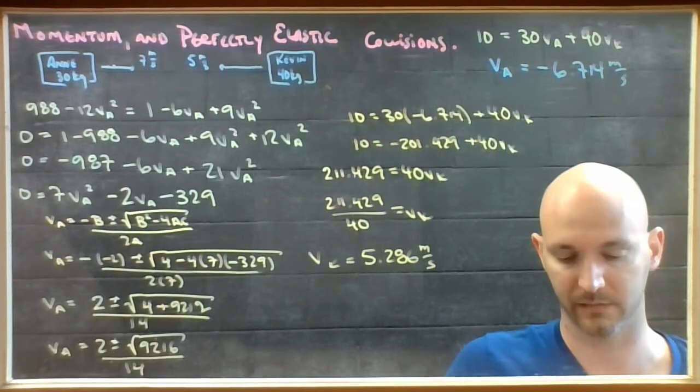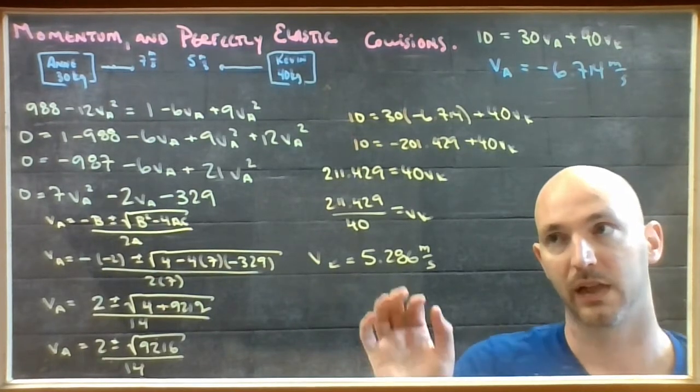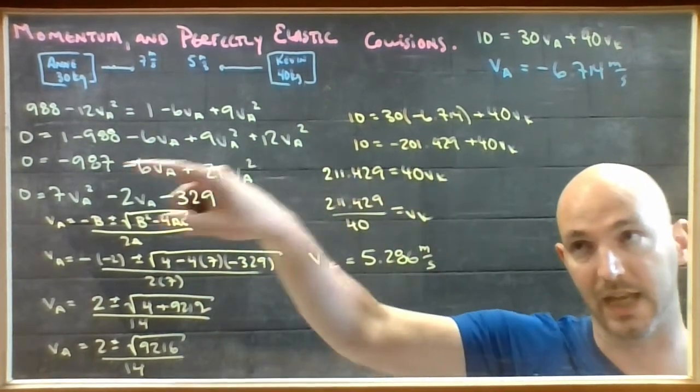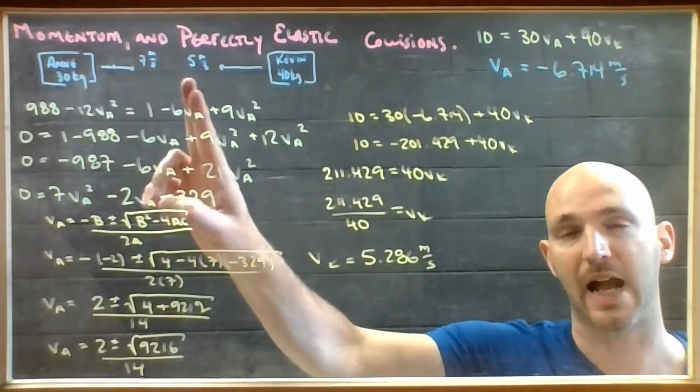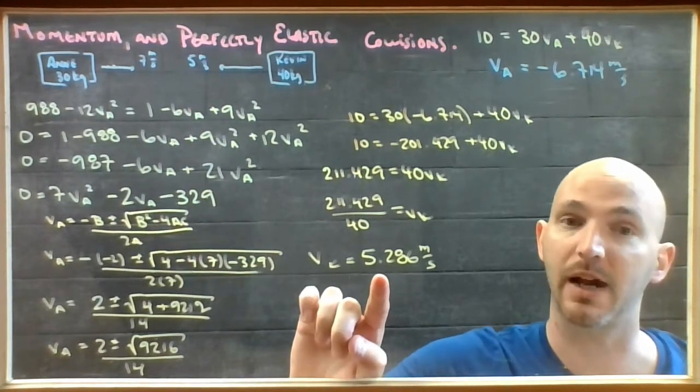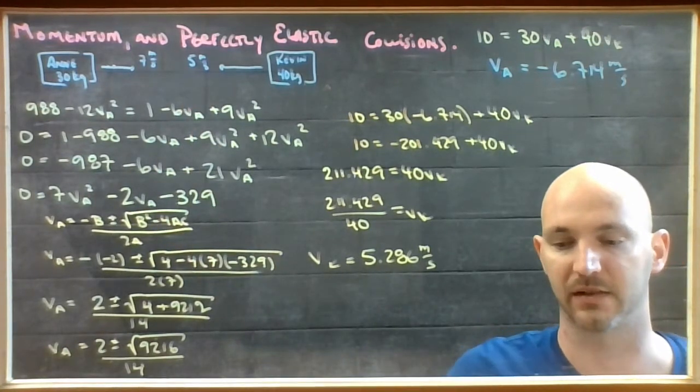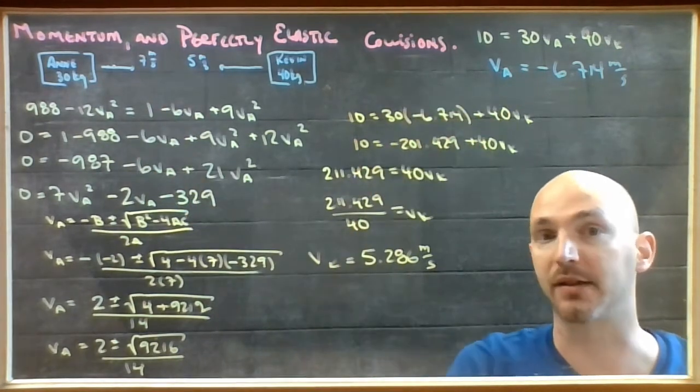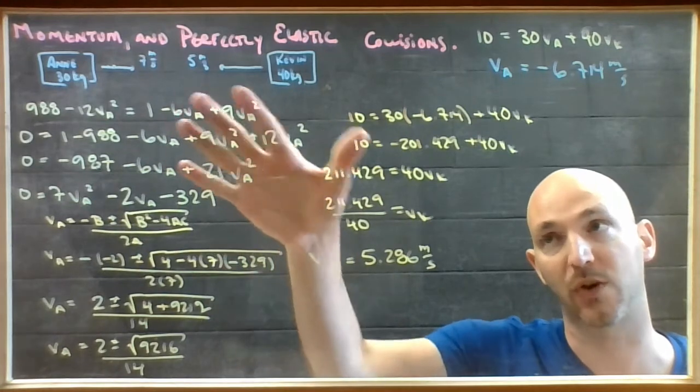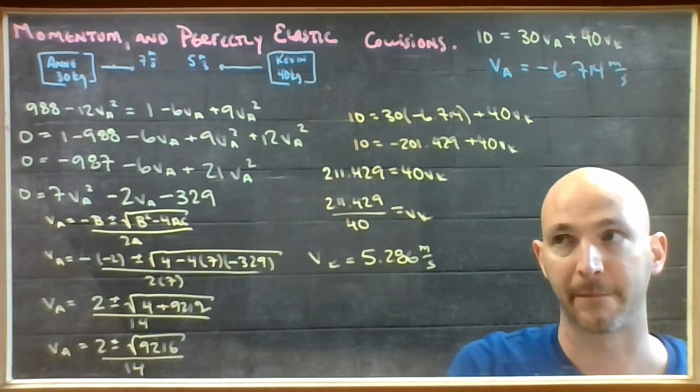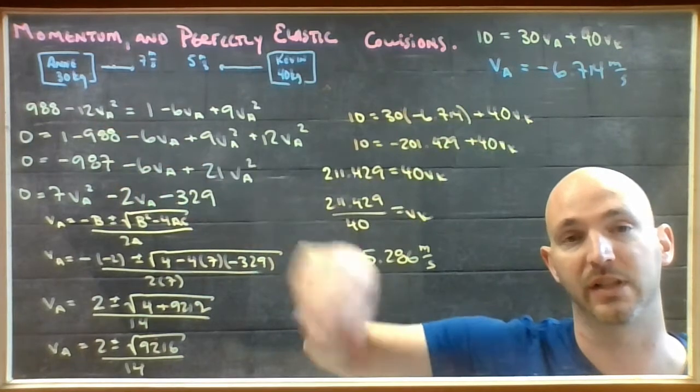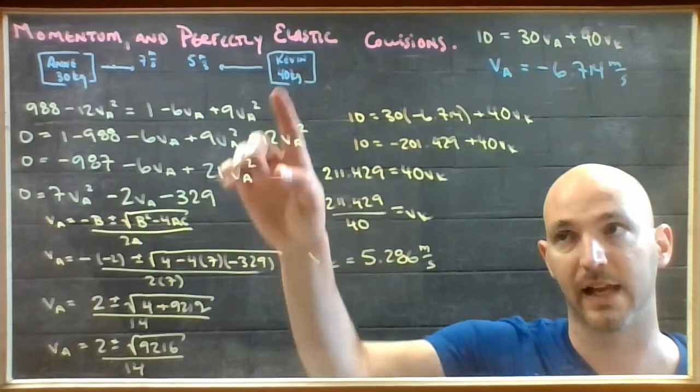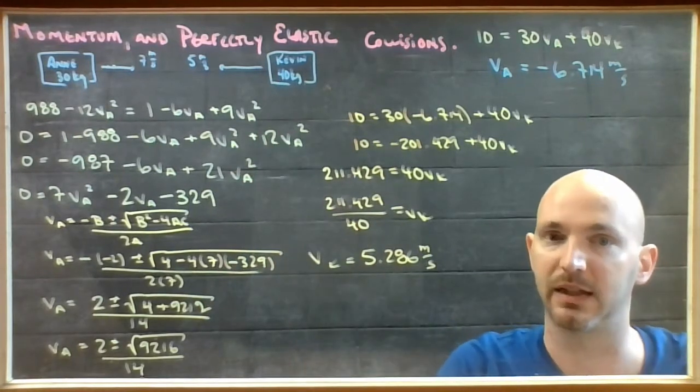Notice that it's positive. So what I've got worked out here is that Kevin was headed to the left originally at 5 meters per second, after the collision is headed to the right at 5.286 meters per second. So if you look at what's happened, Ann has lost some of her kinetic energy and it has been transferred to Kevin. Ann leaves the collision less quickly than she went in, and Kevin leaves the collision more quickly than he went in.